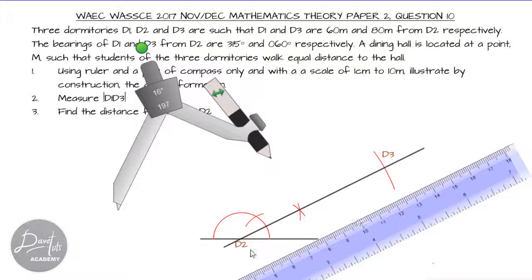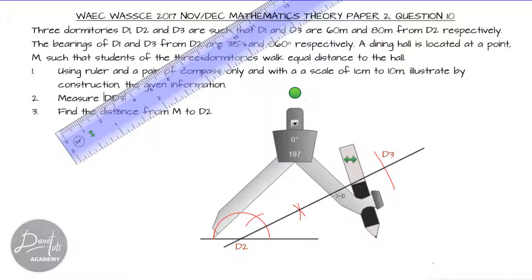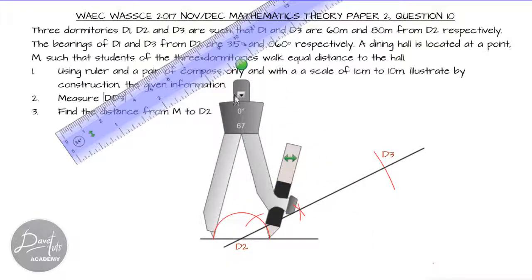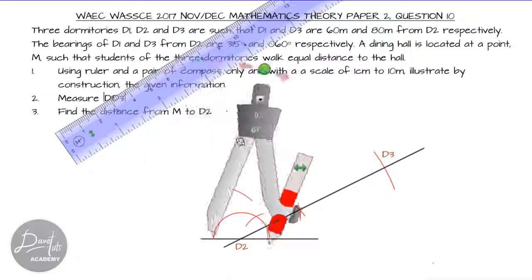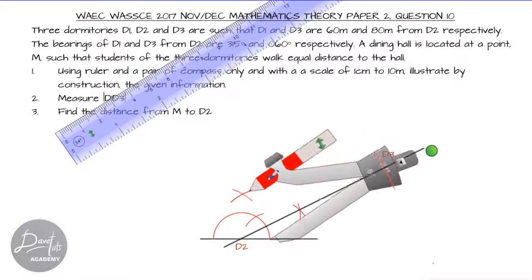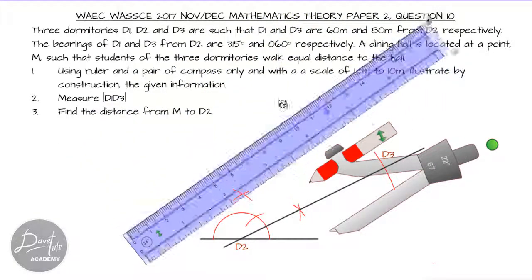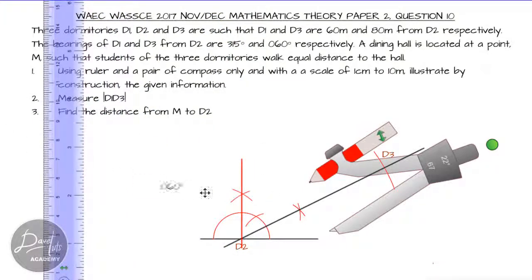We now locate D3 — dormitory 3. Since our bearing is taken from the north, we find north by bisecting 180 degrees. Going to each end of the semi-circle and using the same radius, we mark off arcs that intersect. This point of intersection to D2 constitutes 90 degrees, which is the north from D2. We can now accurately label the bearing from D2 to D3 as 060 degrees.